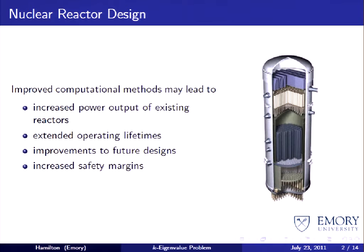If we can reduce those uncertainties, then we can do things like increasing the power output of existing reactors and extending operating lifetimes. These correspond to lower operating costs and ultimately lower cost of electricity. In addition, we hope to make improvements to the next generation of reactors and improve features like creating reactors that are passively safe, which is a big area of research in the industry right now.